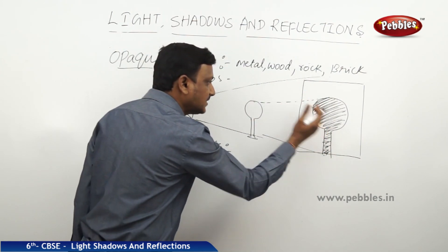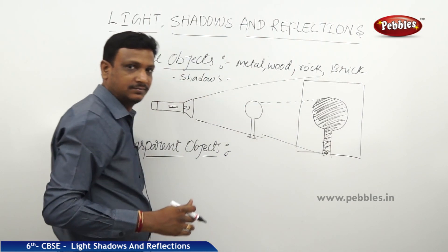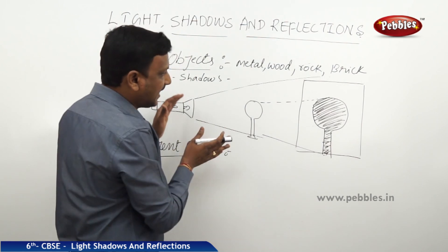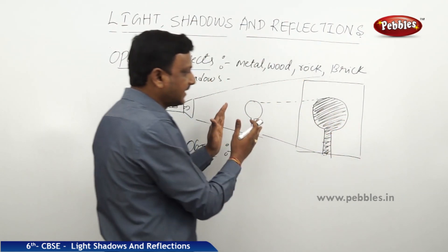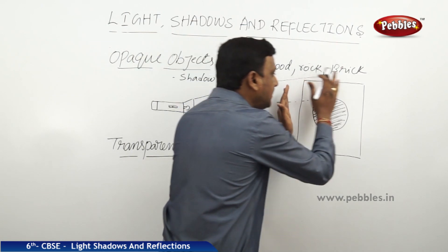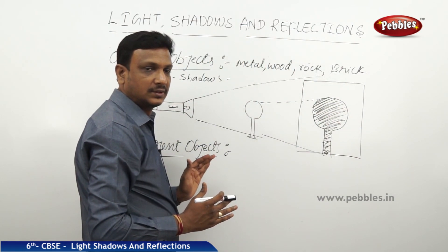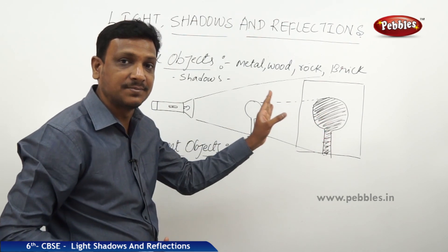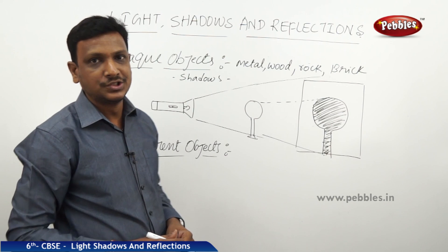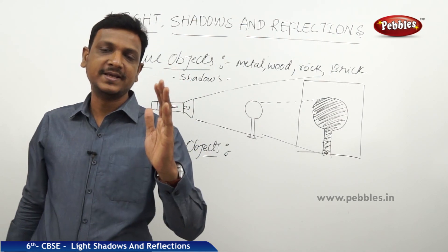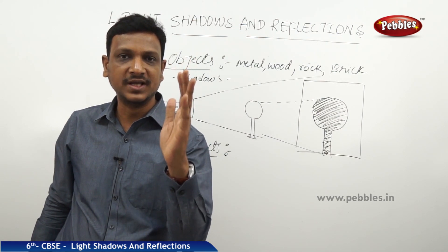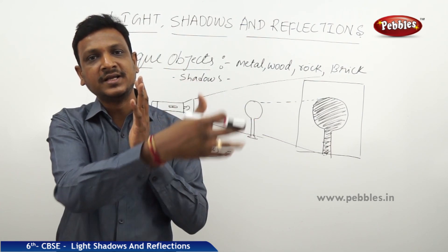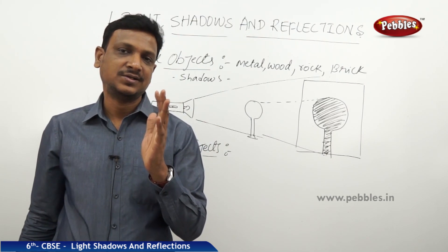The shadow is falling because the light is not falling in that area — that is all. Shadow is nothing but the absence of light. Earlier when the object was not there, the light was falling completely on the cardboard. Now the light is obstructed by the object in one area, so that area becomes the shadow.